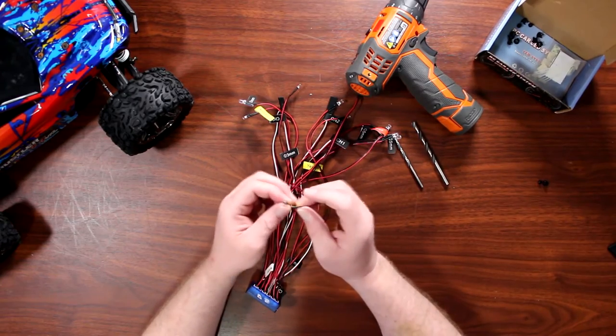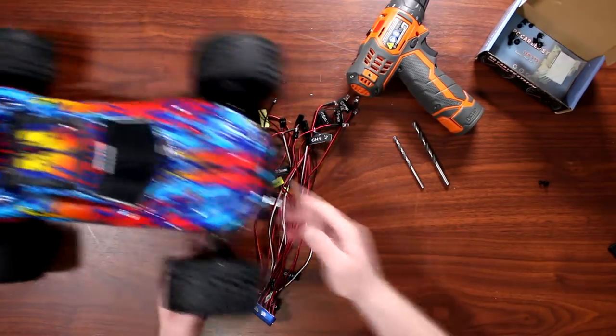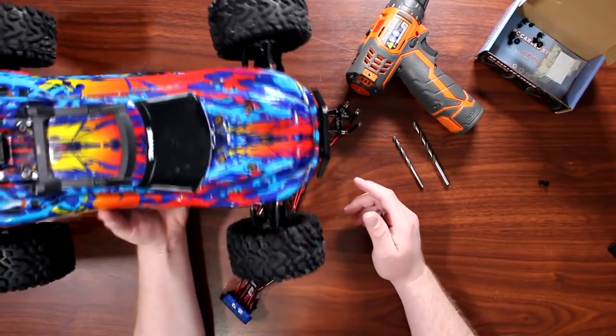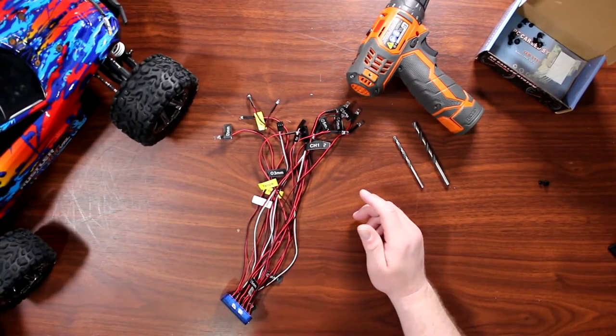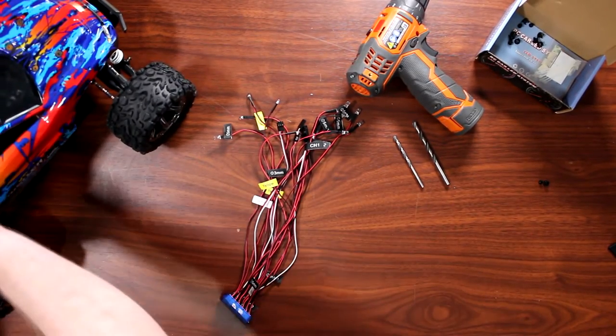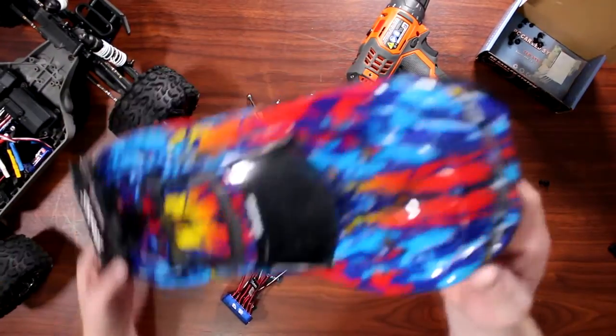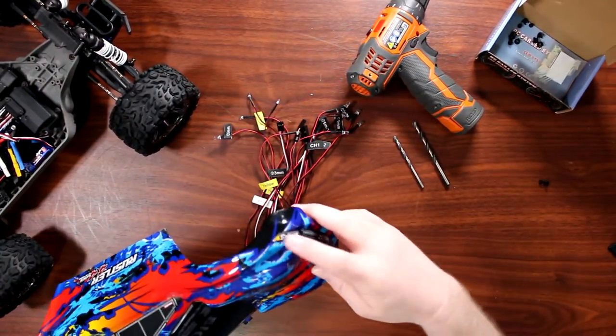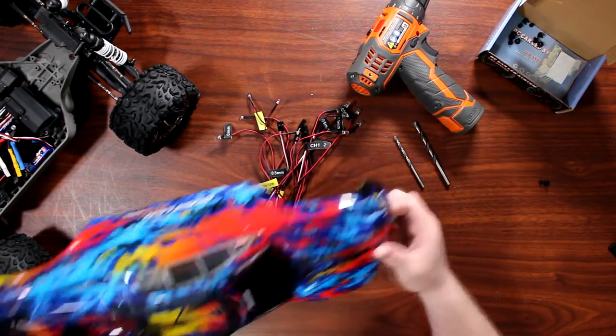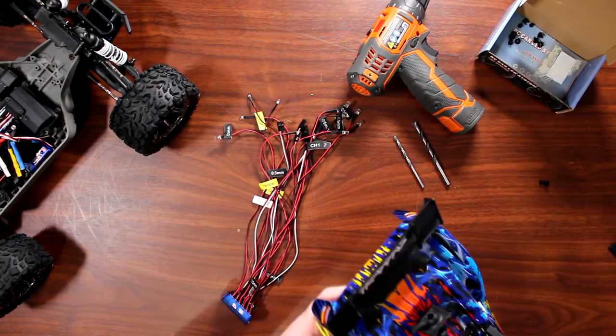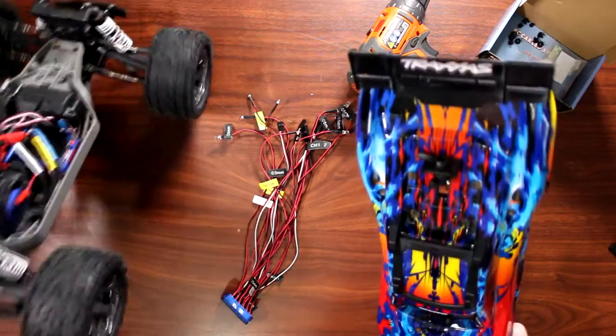Now the way I want to show you guys to install this is basically on this Traxxas Rustler 4x4. We're on the physical body itself. Let's remove the body here. It doesn't have any light buckets. There's none of it, even in the back.